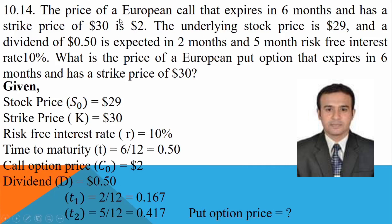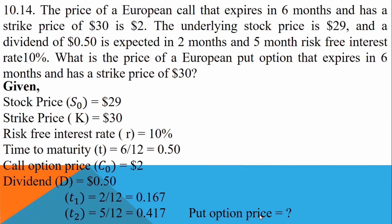Problem 10.14: The price of a European call that expires in six months and has a strike price of $30 is $2. The underlying stock price is $29, and a dividend of $0.50 is expected in two months and five months. The risk-free interest rate is 10%.